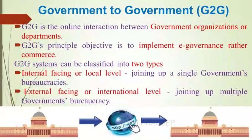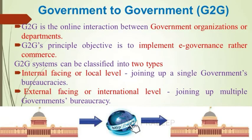Government to government is the online interaction between government organizations or departments. Its principal objective is to implement e-governance. The government to government model involves distributing data or information between its agencies and departments. It can be classified into two types: internal facing or local level, which means joining up a single government's bureaucracies, and external facing or international level, which means joining up multiple governments' bureaucracies.